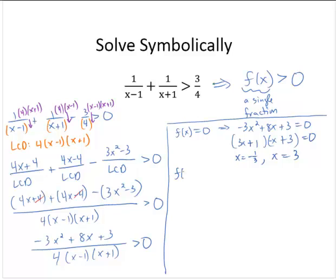Where is the function undefined? Well, that would happen if the denominator, 4 by x minus 1 by x plus 1, is 0. And so then x equals 1 and x equals negative 1.